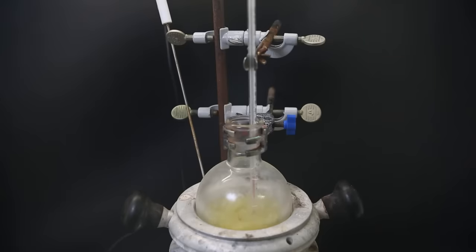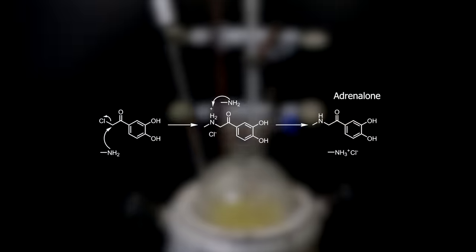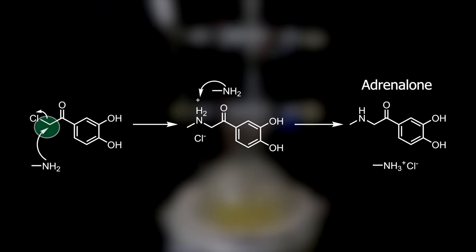When all of it has been added, I move it out of the ice water bath and into a heating mantle and then heat it to 35°C and leave it to stir for three hours to make sure that the reaction is complete. In this reaction, the amine from methylamine attacks the carbon adjacent to the chlorine, causing the chlorine to be kicked off. The resulting intermediate is deprotonated by another methylamine molecule, forming methylamine hydrochloride and the product, adrenaline.